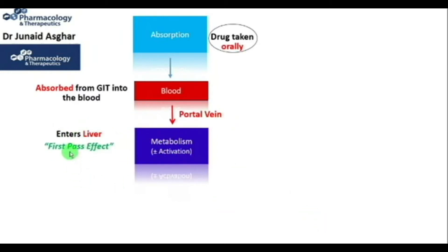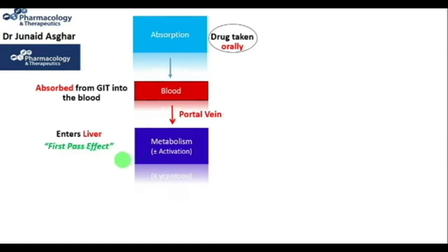What is the first-pass effect? For an orally administered drug, it has to pass through the liver first before it appears in the systemic circulation. First-pass metabolism is also known as pre-systemic metabolism, because some part of the drug gets metabolized in the liver before it appears in the systemic circulation. First-pass effect is a phenomenon associated with orally administered drugs only. Thus, drugs can suffer extensive biotransformation, sometimes to such an extent that the bioavailability of the drug is drastically reduced.